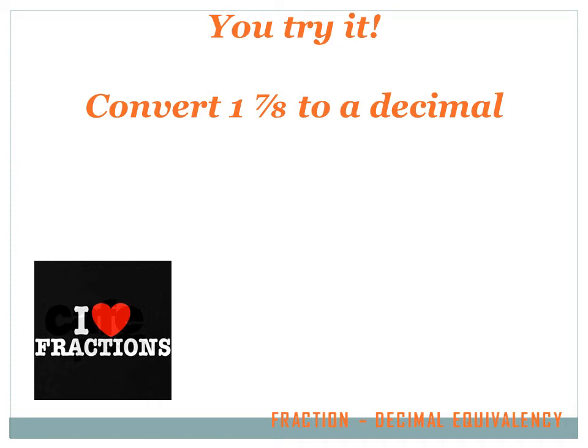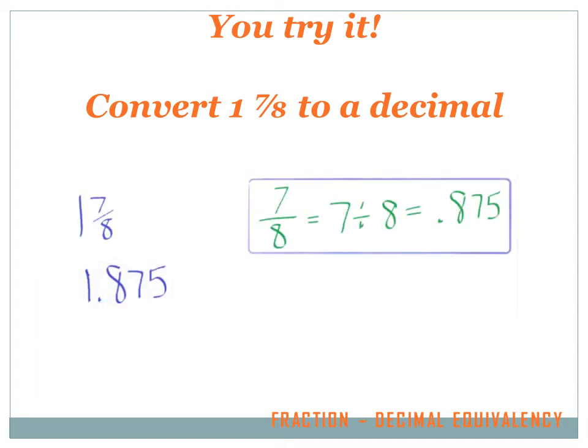Try this one. One and seven-eighths. All right. What I want to do is pull the seven-eighths to the side and convert that to a decimal. So I've got seven divided by eight, which equals .875. Now I take that .875 and tack it on to the one, and I got 1.875 is the equivalent of one and seven-eighths.